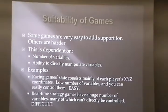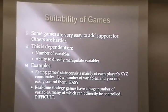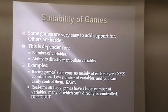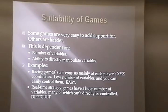We've found that some games are very easy to add support for to play online; others are much harder. That's dependent mostly on the number of variables and the ability to directly manipulate those variables. In a racing game, you can pretty much summarize the game state by the player's XYZ coordinates — not many variables, and it's easy to find them because you can control them directly. Real-time strategy games, however, are much harder — there are many variables and you can't always directly manipulate them, so it's really hard to find where they are.